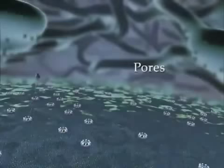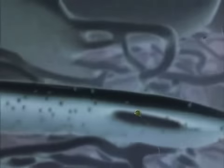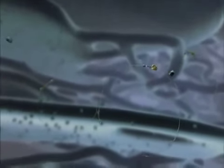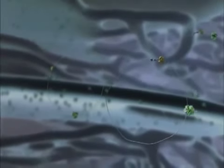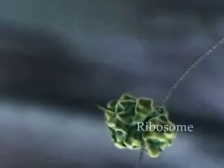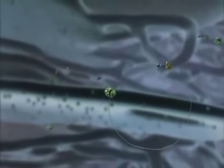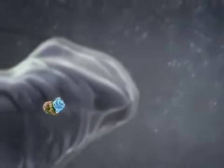Pores in the nuclear envelope allow the import of particles containing mRNA and proteins into the cytosol. Here, free ribosomes translate the mRNA molecules into proteins. Some of these proteins will reside in the cytosol. Others will associate with specialized cytosolic proteins and be imported into mitochondria or other organelles.